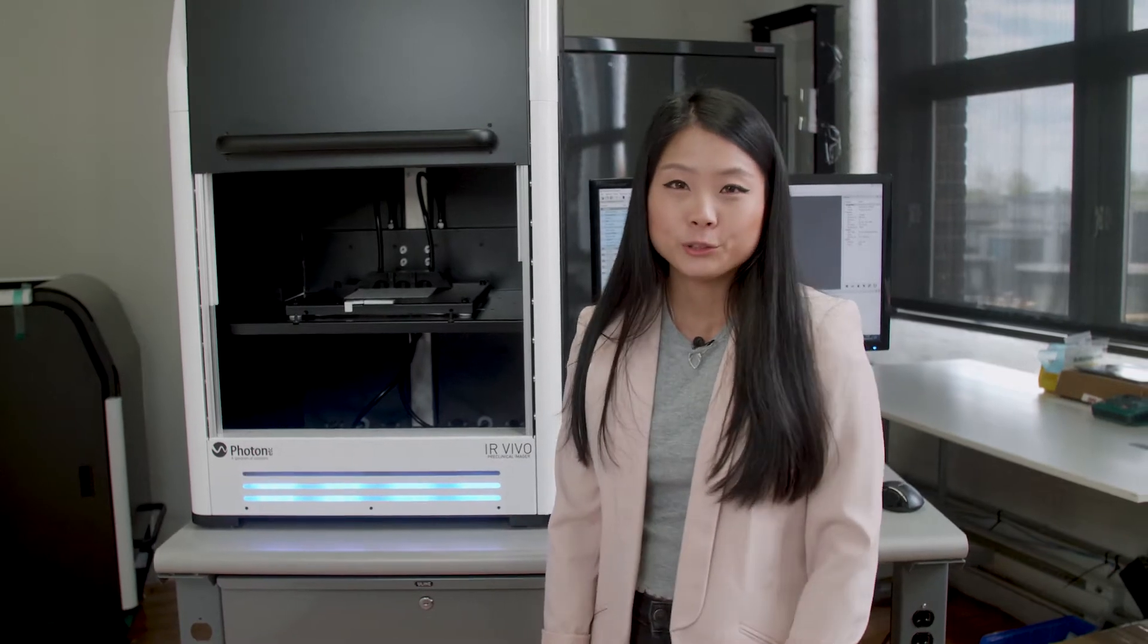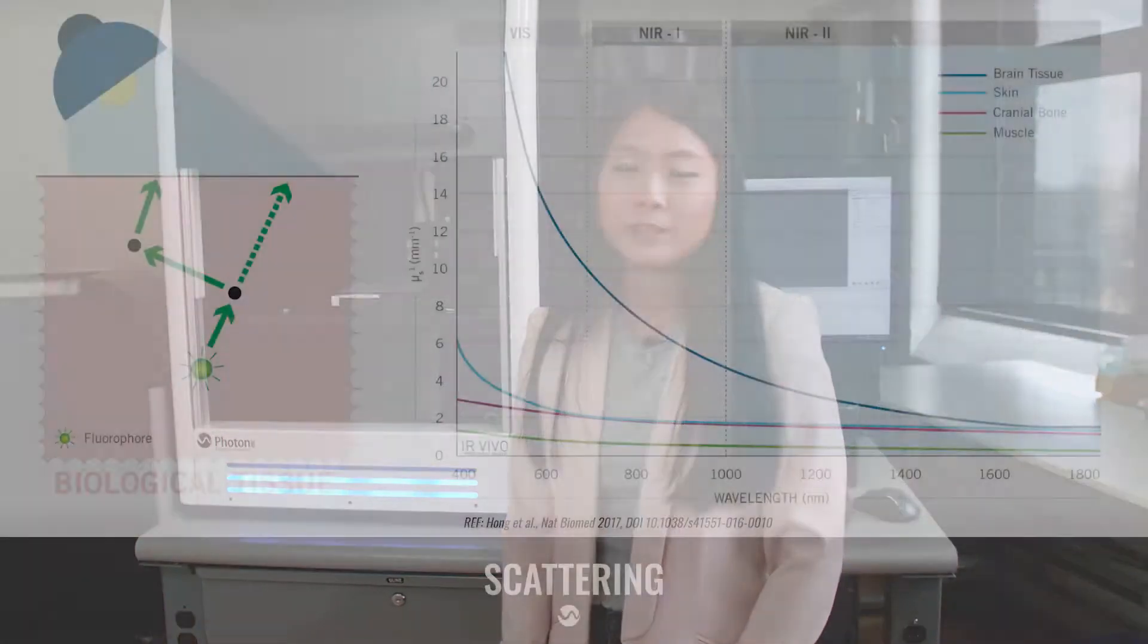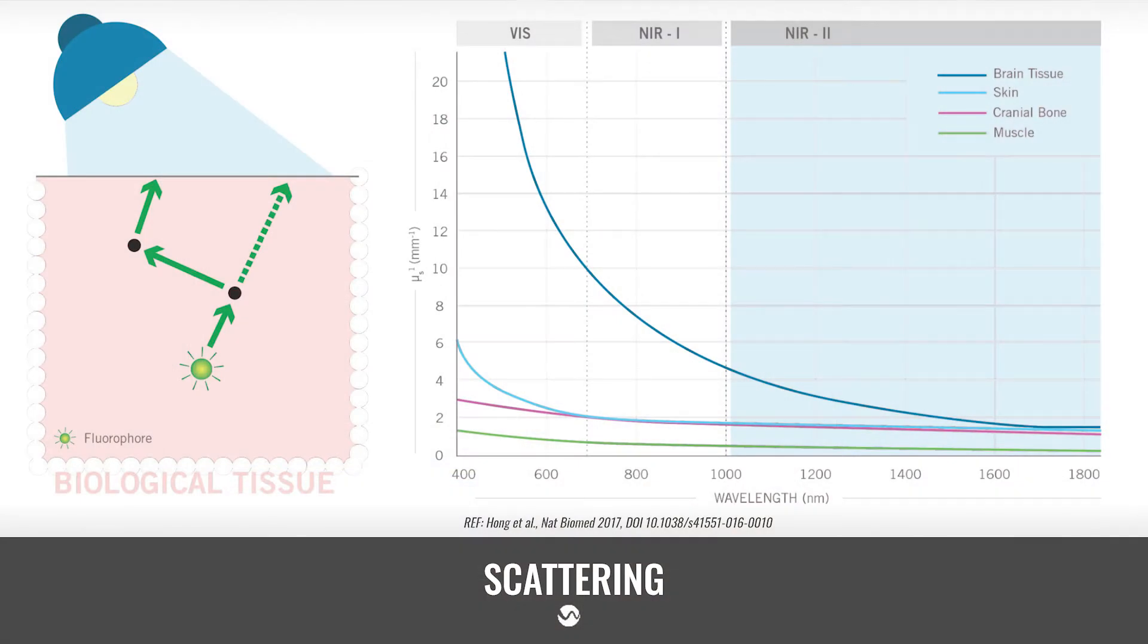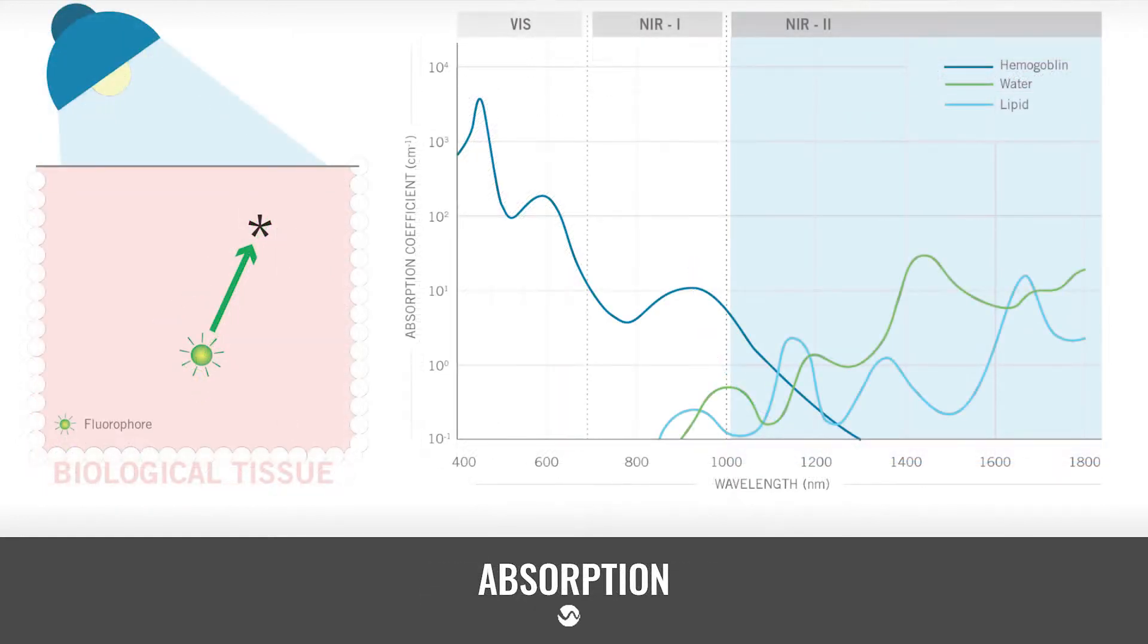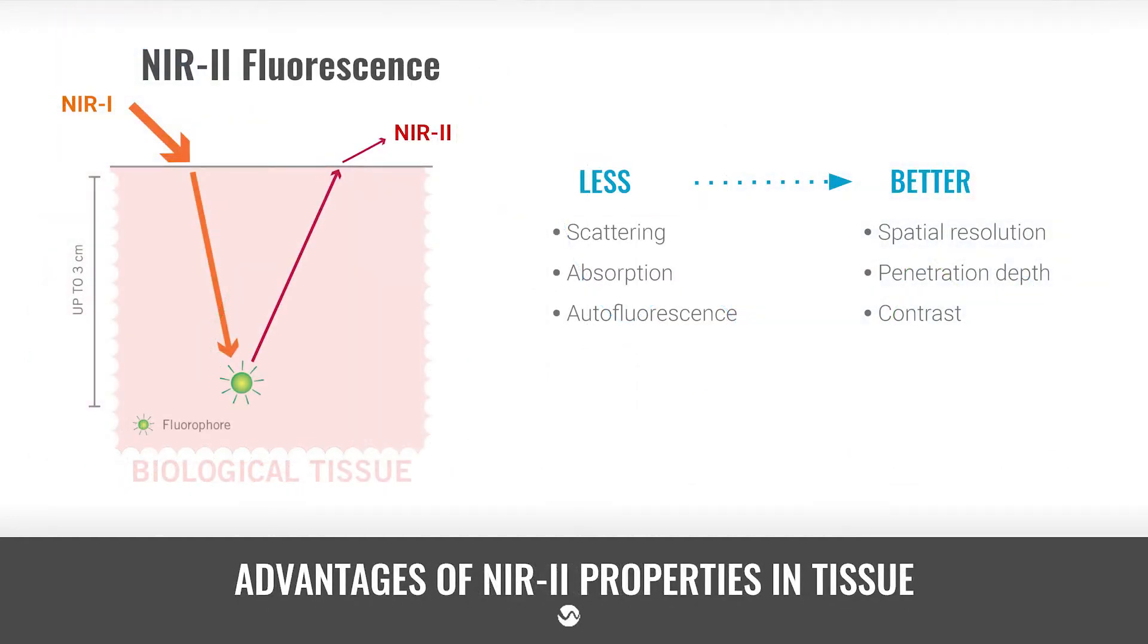Using the near-infrared window has a lot of advantages. As you can see in the graphs beside, there's a lot less scattering, less fluorescence and also less absorption. And all these factors combined together, you can achieve a higher spatial resolution, a higher contrast and also a higher penetration depth that is up to 10 times more than in the visible region.